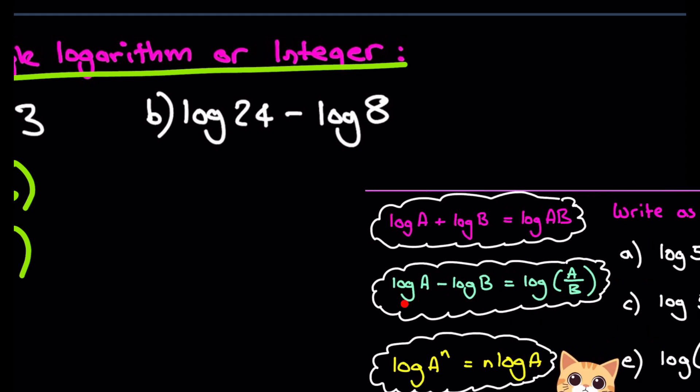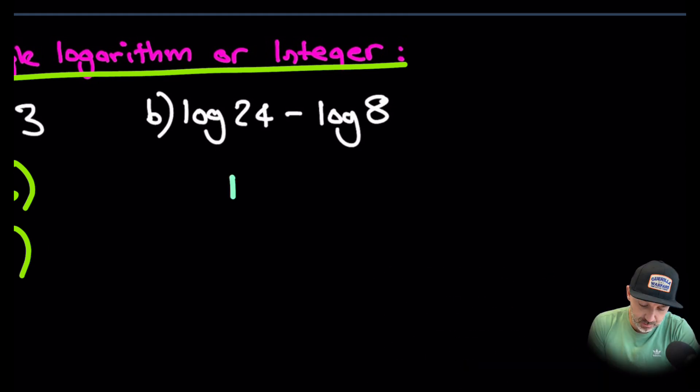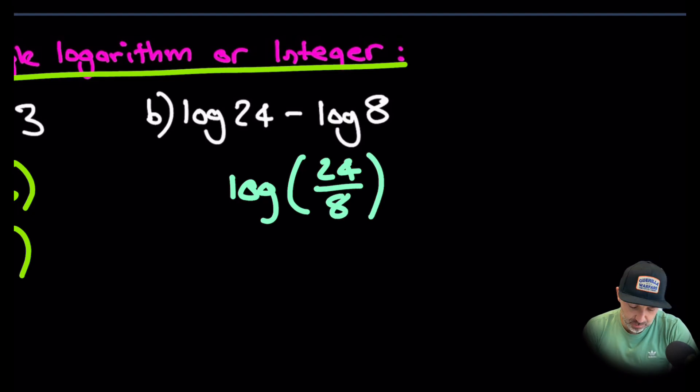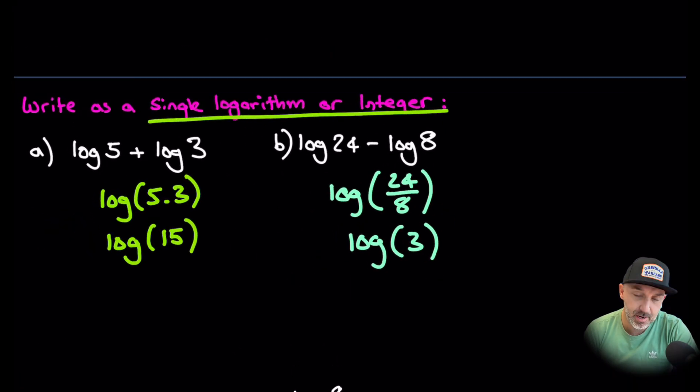Here is a subtraction example. We have log 24 minus log 8, so that will be log 24 divided by 8, and that is 3. So the answer will just come out to be log 3 and that is part A and B.